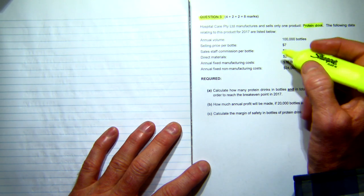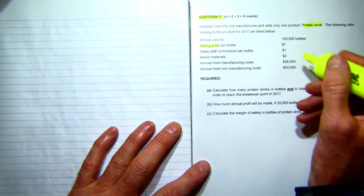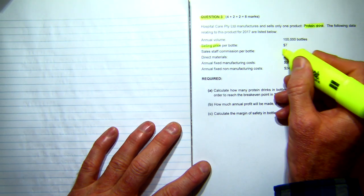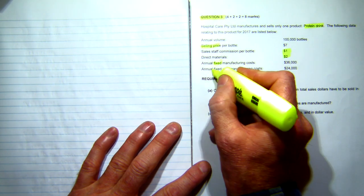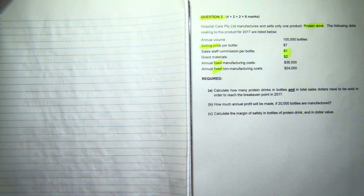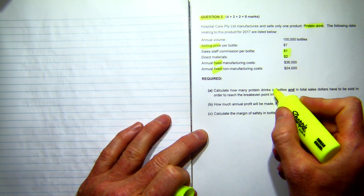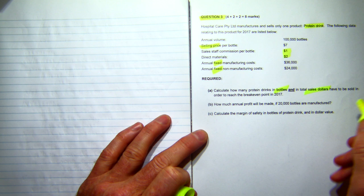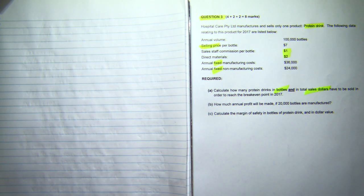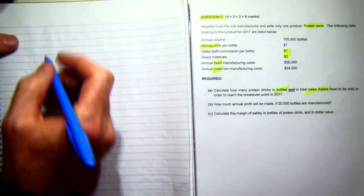And we've got a selling price, we've got some costs per bottle, we've got some fixed manufacturing and non-manufacturing amounts. And it says here, calculate how many protein drinks in bottles and total sales dollars have to be sold in order to reach the break-even point of 2017. Okay, so what we do, our break-even.